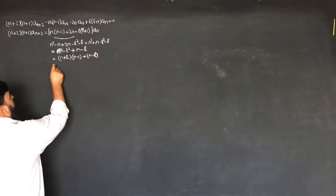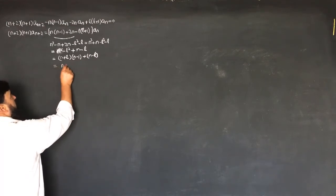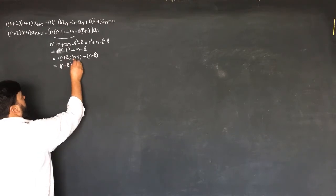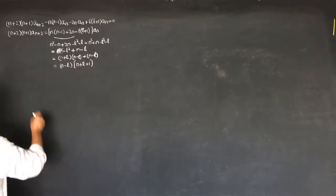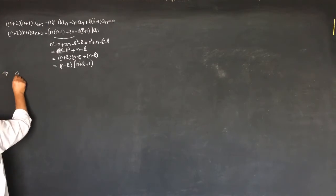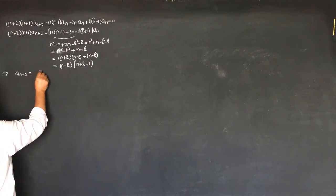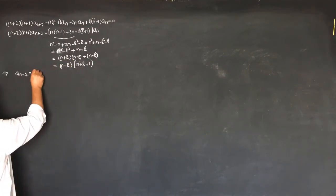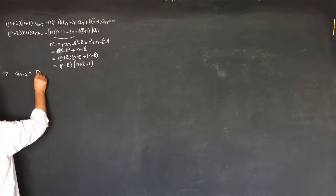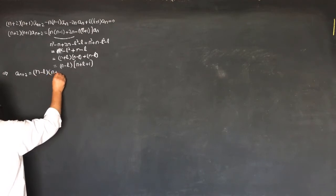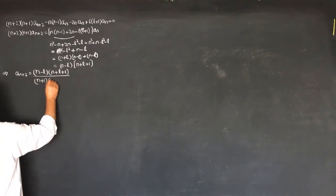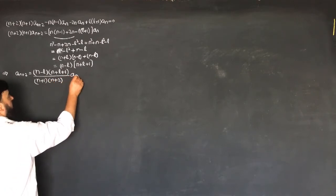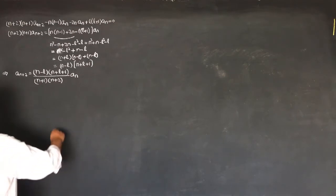If we take con as n minus l, then n minus l is taken as con m sub n plus l plus 1. This implies that a_{n+2} is equal to (n minus l)(n plus l plus 1) divided by (n+1)(n+2) times a_n. This is the recursion relation.